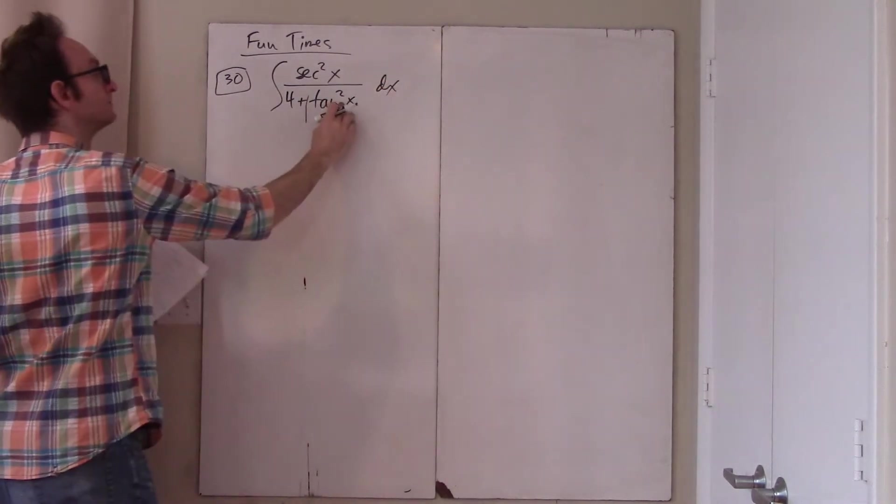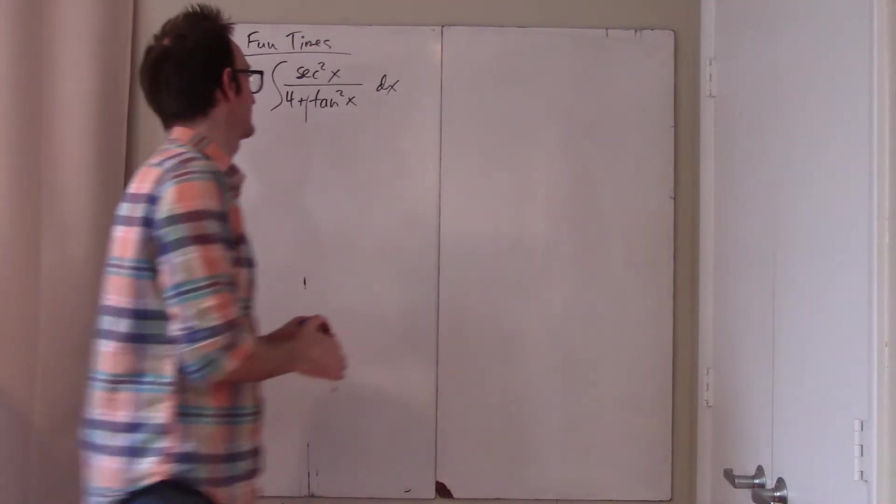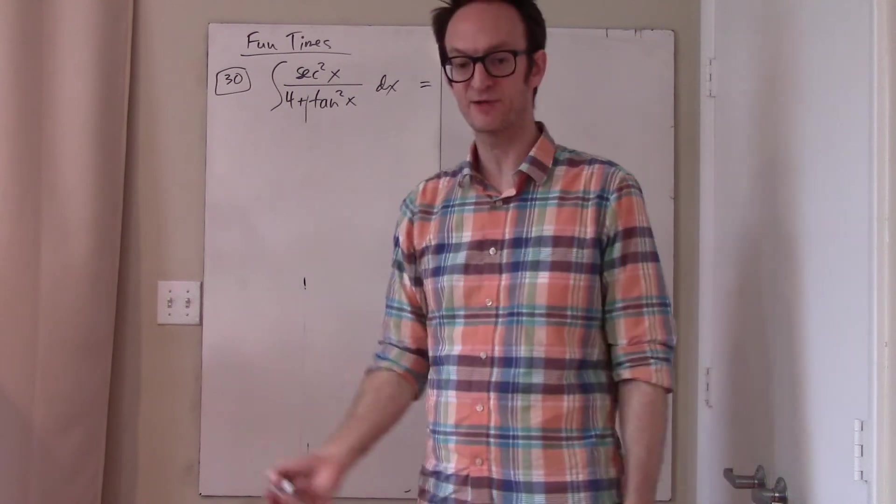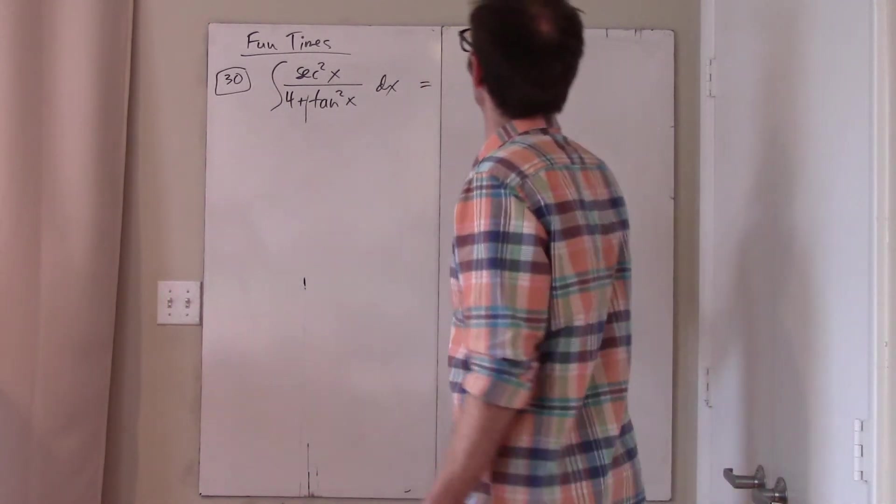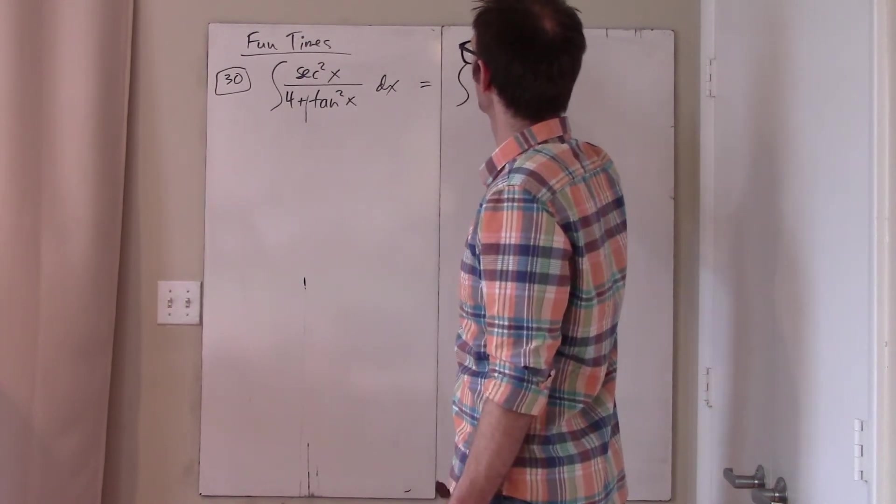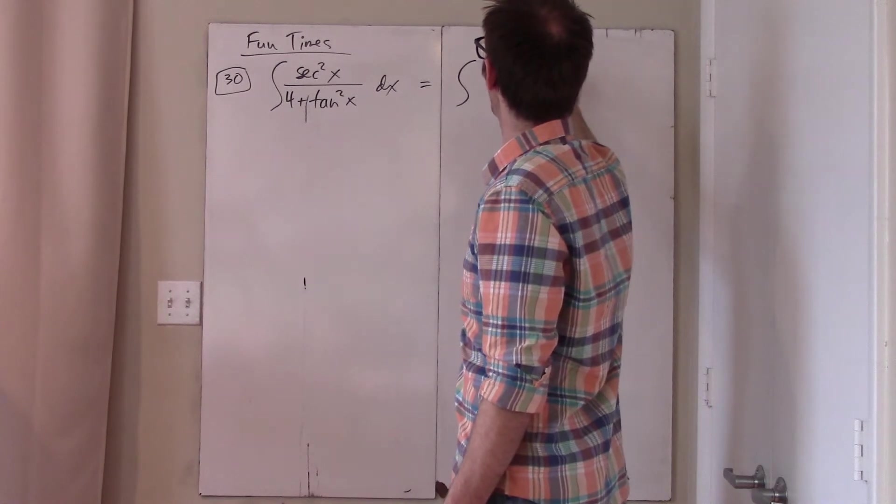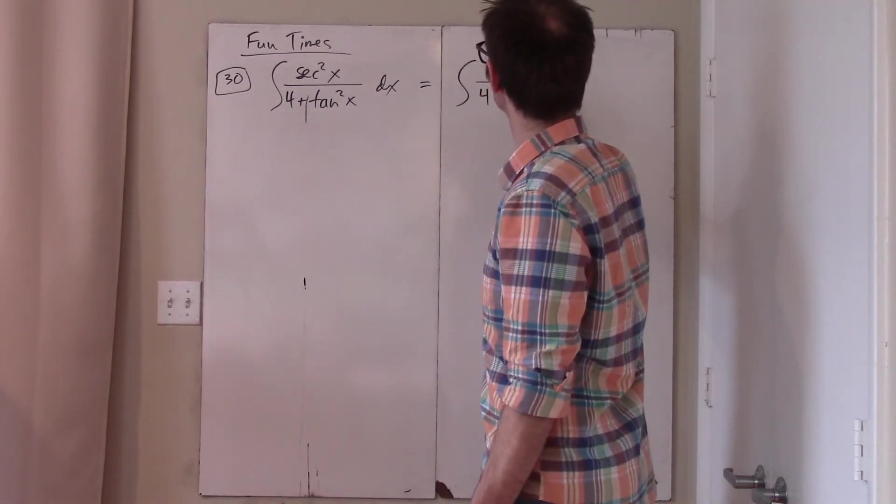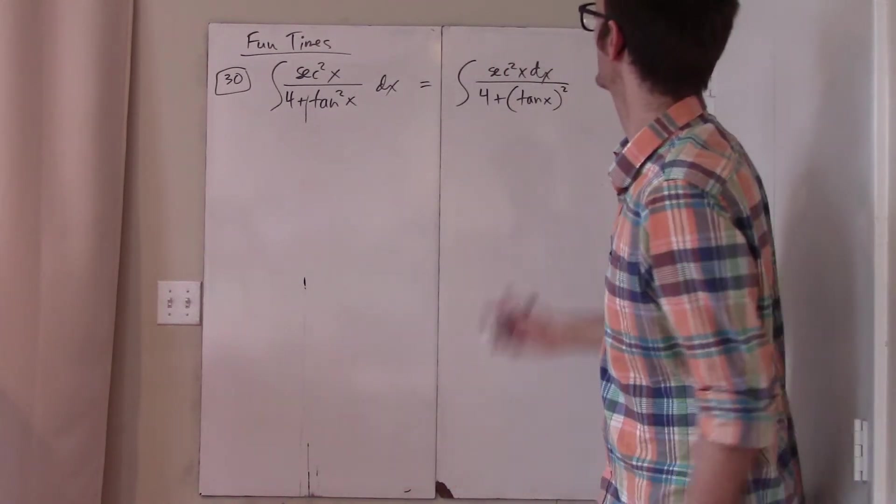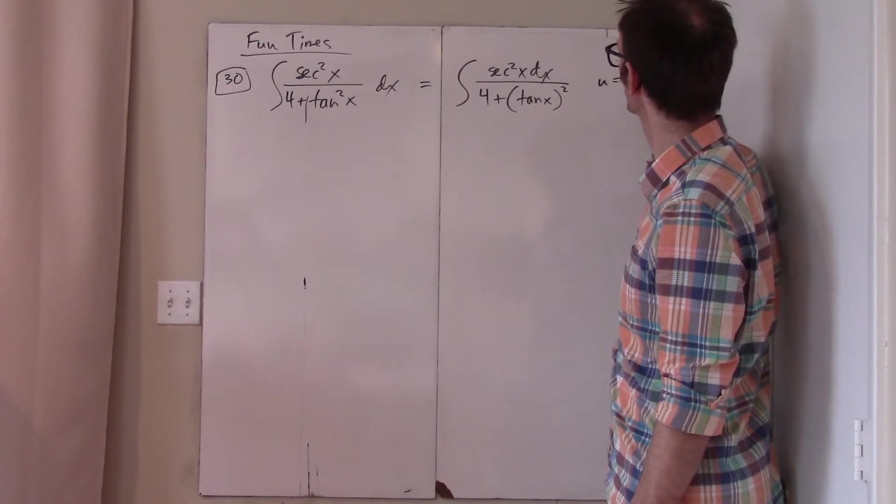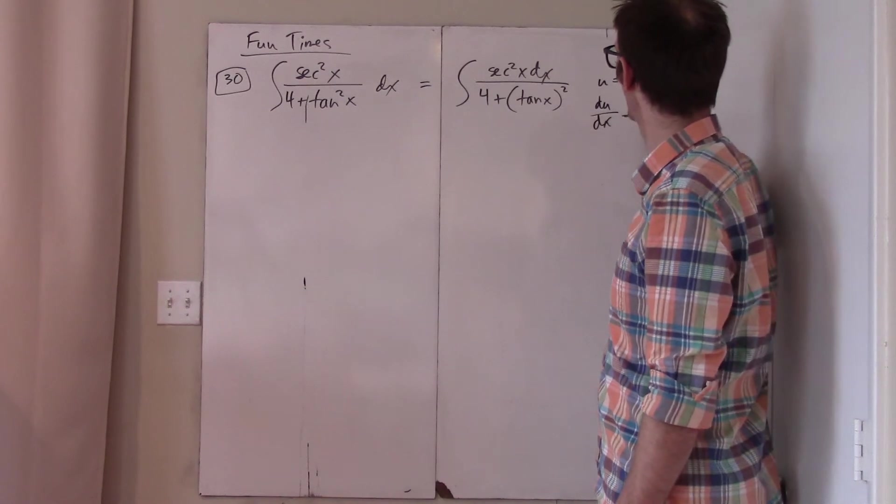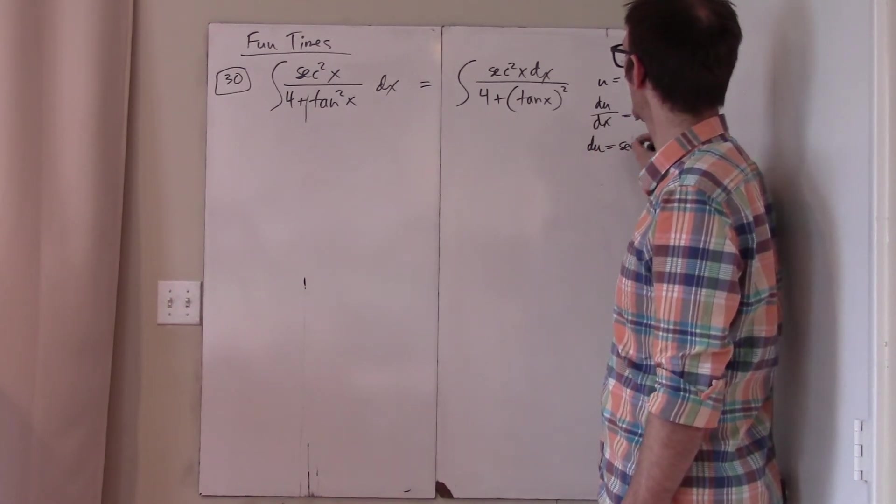Okay, well, careful observers will see that secant squared and tan have a certain relationship, namely that the derivative of tan is secant squared. So this should perhaps best be thought of as secant squared dx over 4 plus tan x kind of quantity squared, which suggests that we should do the substitution U equals tan x. And if you do that, then du dx is secant squared, and so du is secant squared x dx.